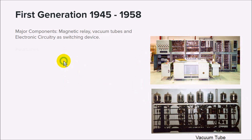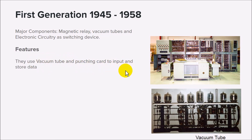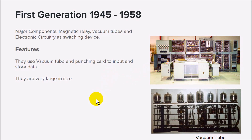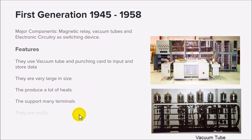The features of the first generation include: they used vacuum tubes and punched cards to input and store data. They are very large in size — big enough to fill a room, as you can see here. They also produced a lot of heat while operating, supported many terminals, and the computer was made up of all these large sections and boxes, making it very big. They were also very expensive.